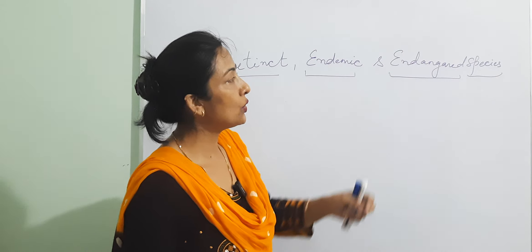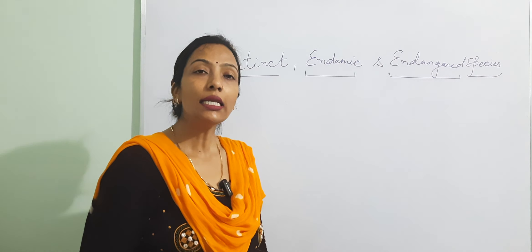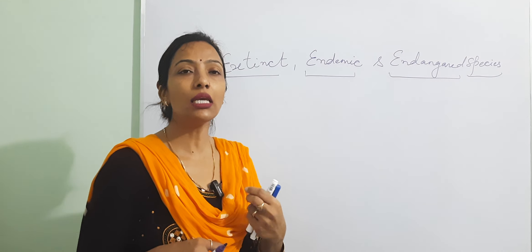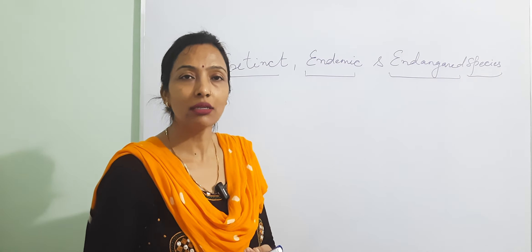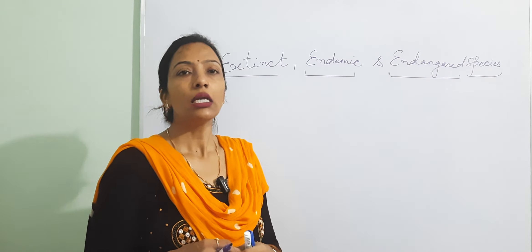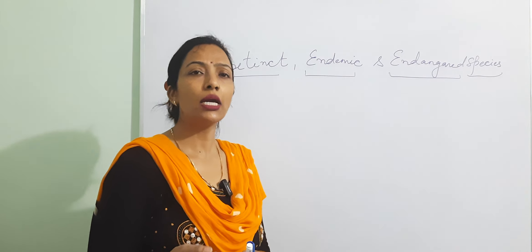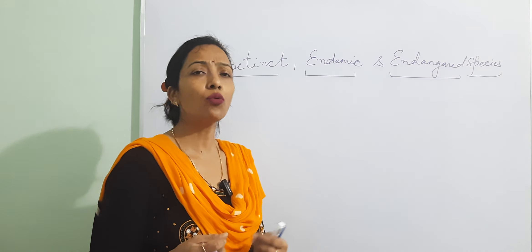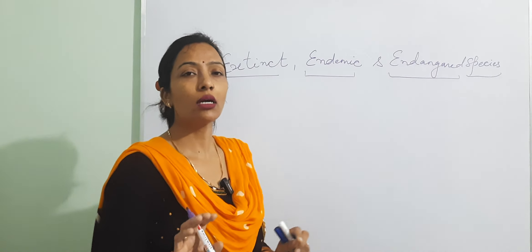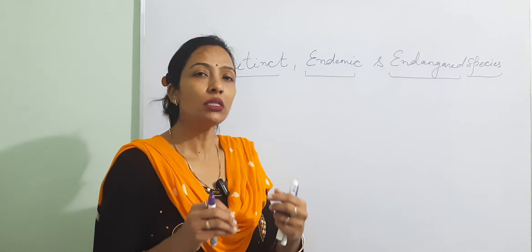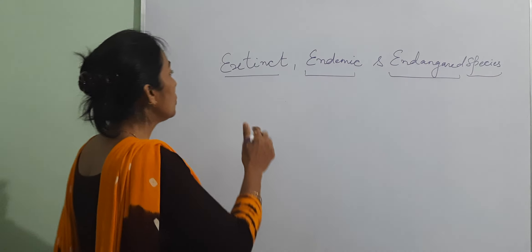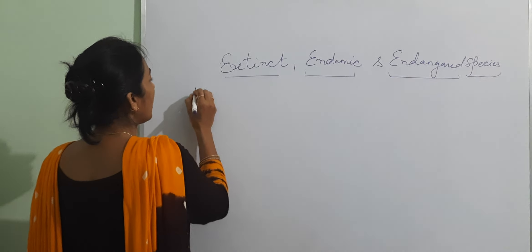And endangered species — these are those species which are in danger of becoming extinct. If we do not take care of these species, whether they are plants, animals, or any microorganism, they will slowly be finished from the earth.